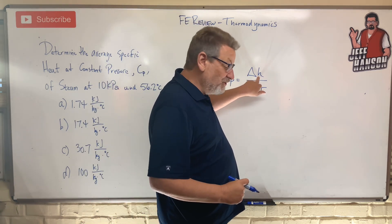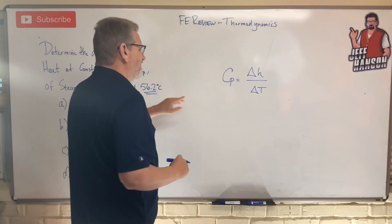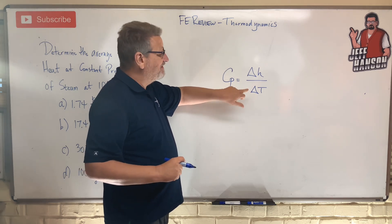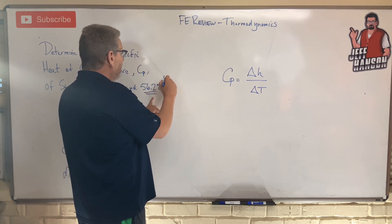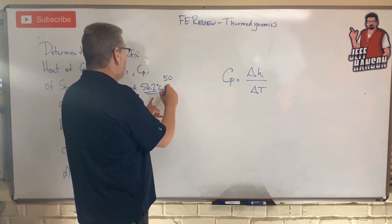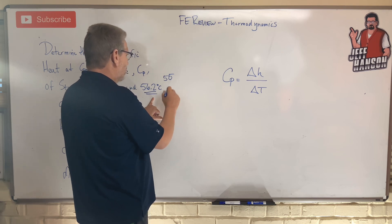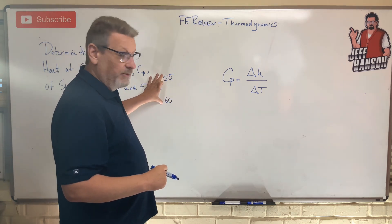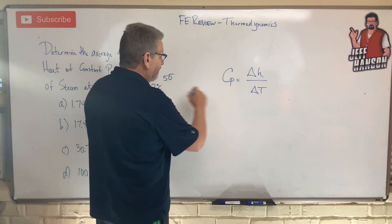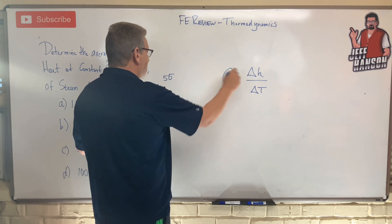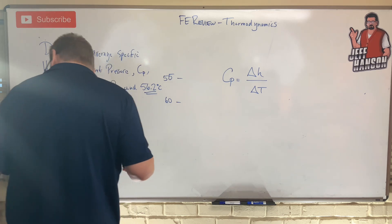We're going to look up our steam table and find the delta h values that surround 56.2 degrees. We also want the temperatures surrounding it — probably 55 and 60 degrees Celsius. Those are the two temperatures we'll look at. We take the difference in temperatures for the bottom and the difference in the corresponding enthalpy values from the steam table for the top.